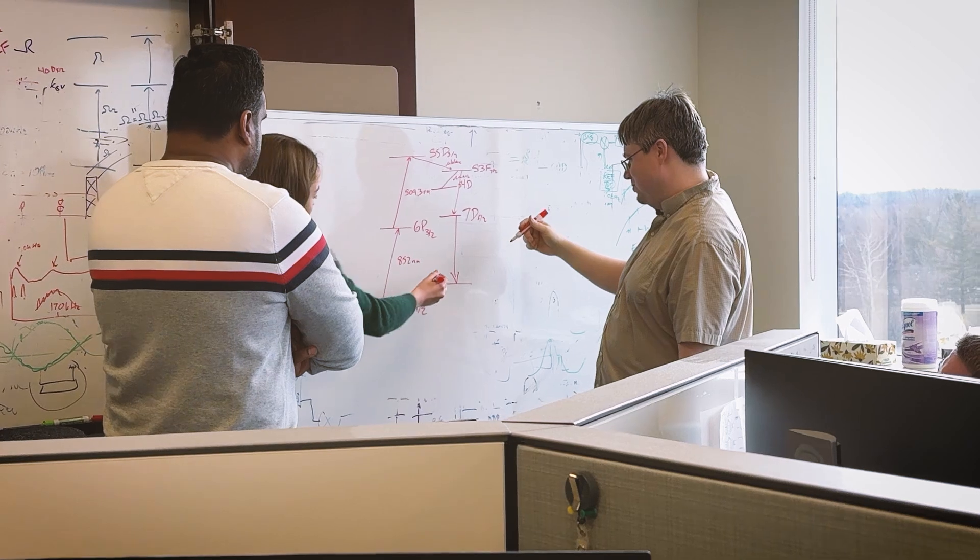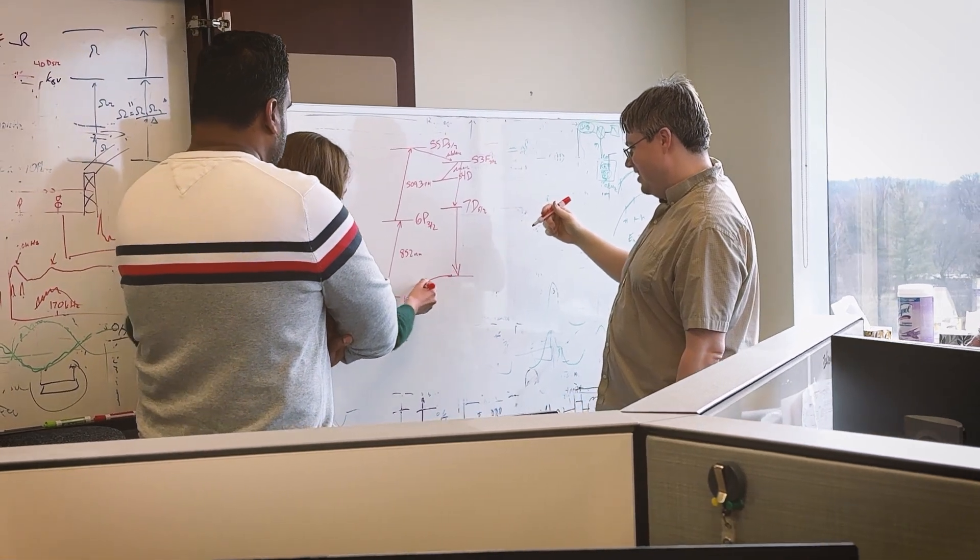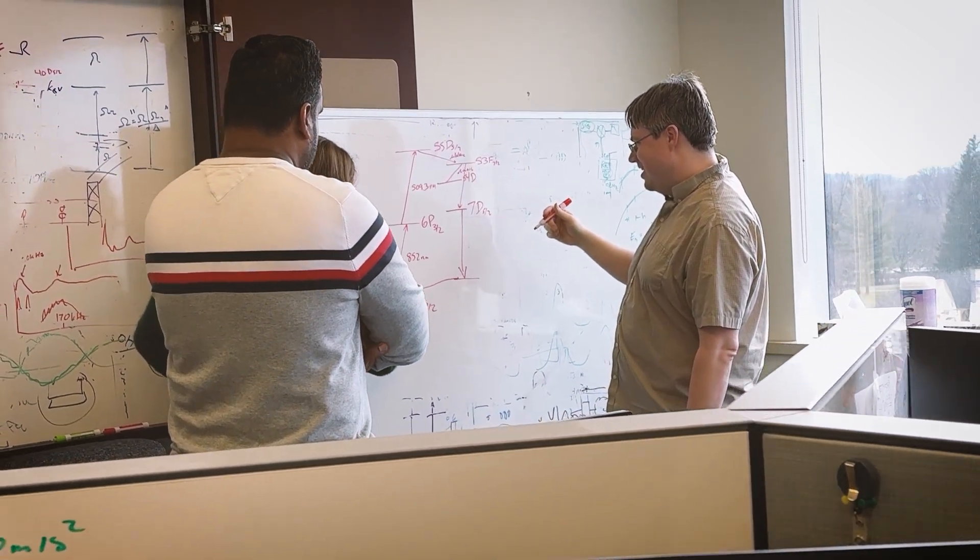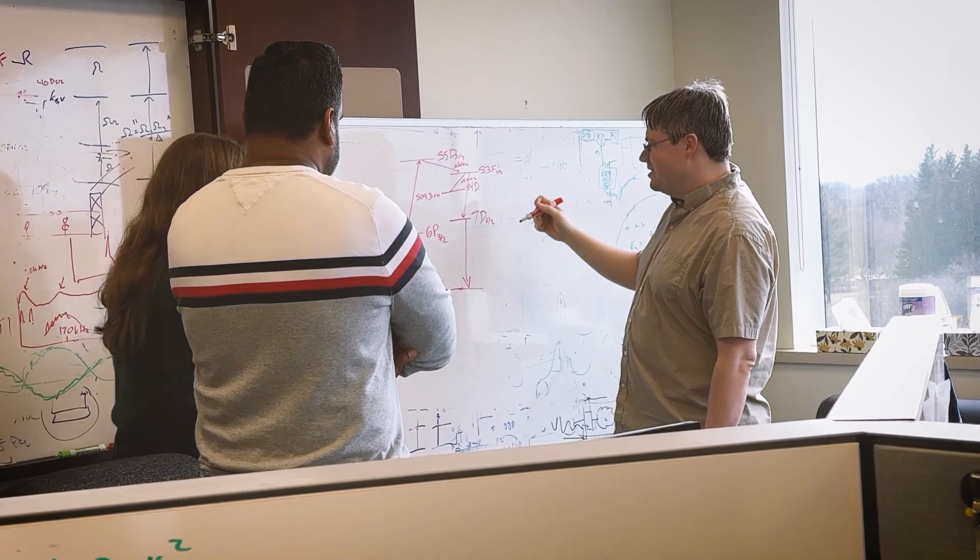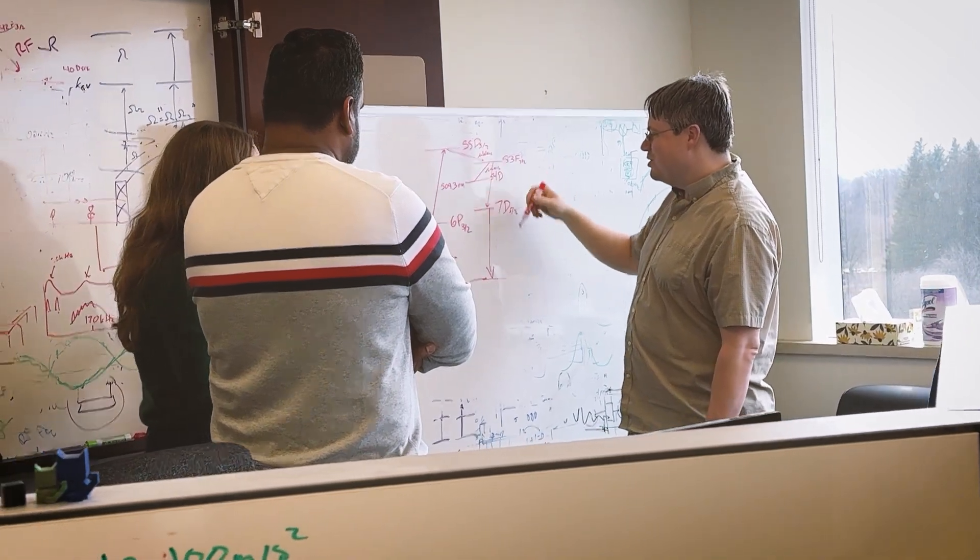The work that we're doing right now is to develop what I'll call a multifunctional navigational device. This will combine the measurements that you would get from a gyroscope as well as the measurements that you would get from an accelerometer. And the idea is that by encompassing all these measurements in one system, we actually reduce drift, we reduce errors, to enable new paradigms of dead-reckoning navigation.